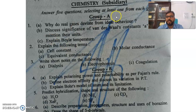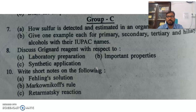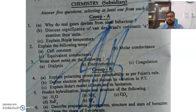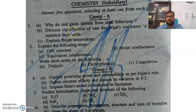Group A is Physical Chemistry, Group B is Inorganic Chemistry, and Group C is Organic Chemistry. For subsidiary students who have taken the honors paper like geology, botany, mathematics, or physics, they are usually taking chemistry as a subsidiary. So you have to answer 5 questions, selecting at least one from each group and then 2 from any group, so that it becomes 5.